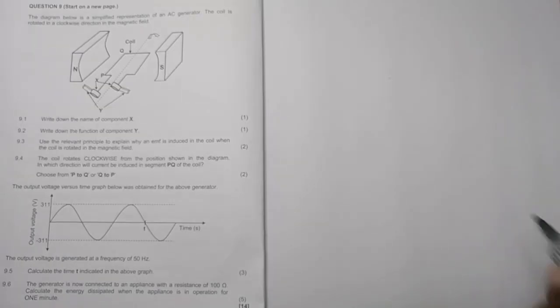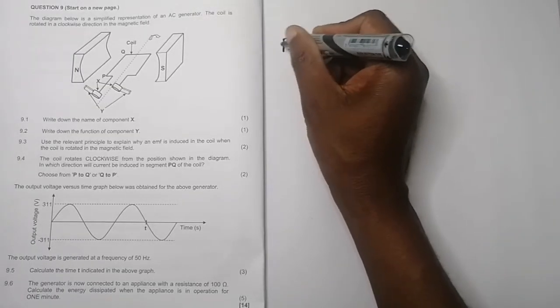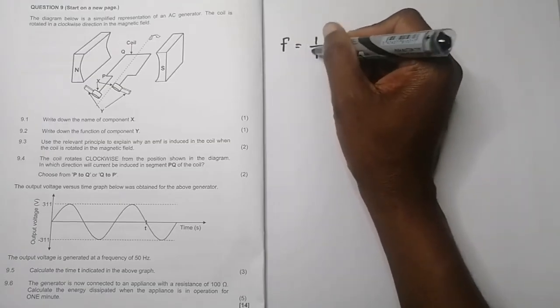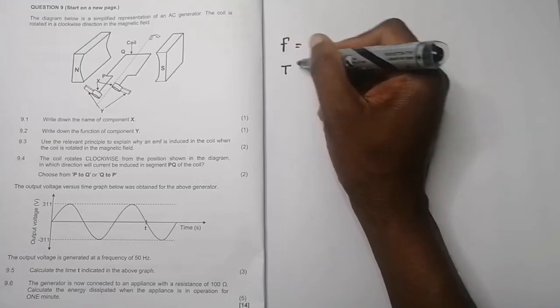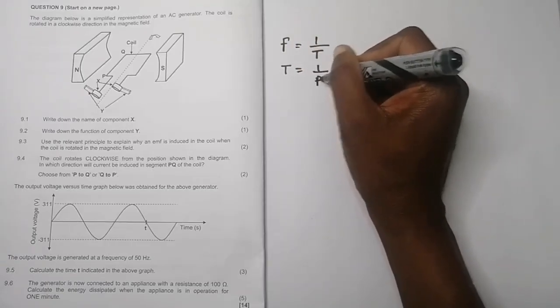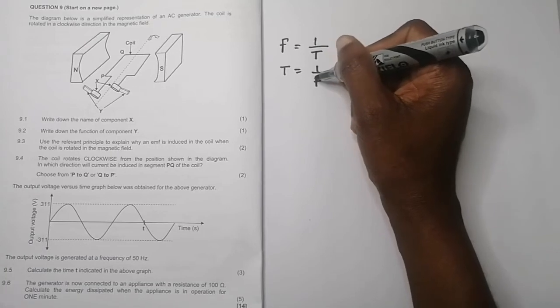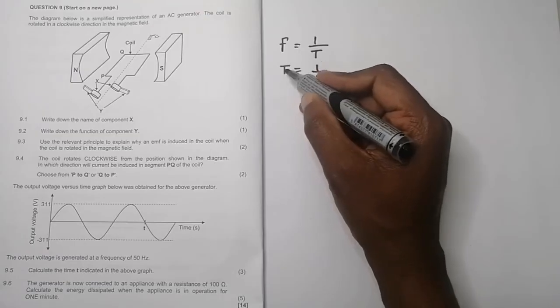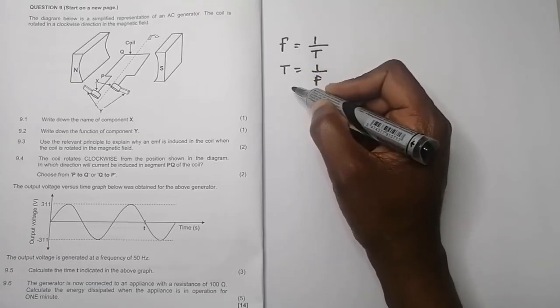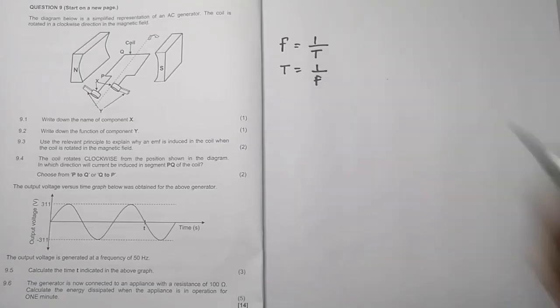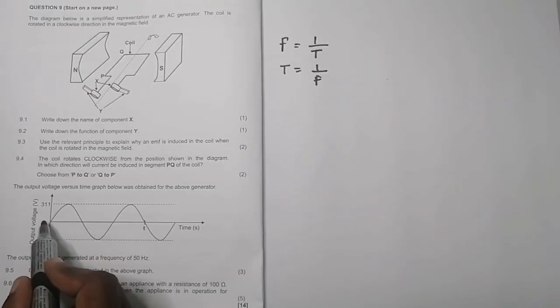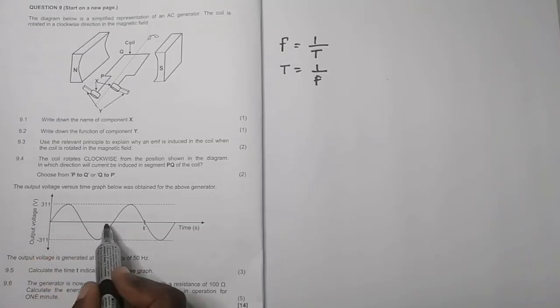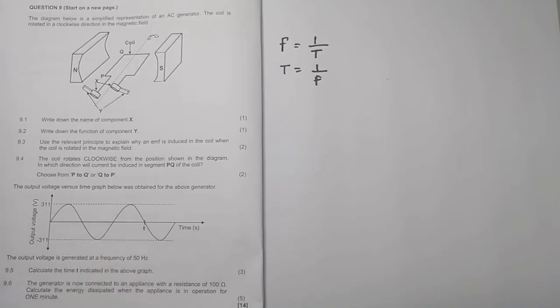Now remember we know that frequency is one over period, or we can simply say it means that period would actually be one over the frequency. Now what you need to keep in mind is that this period that we are calculating is the period to actually complete one full cycle. It's the time that it takes to complete one full cycle. What's a full cycle? That's one and so that's one up and one down - that's a full cycle.